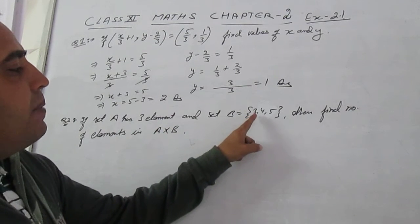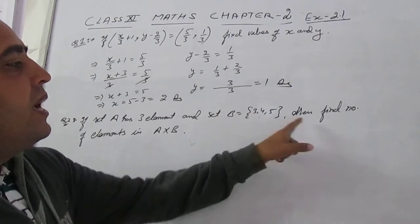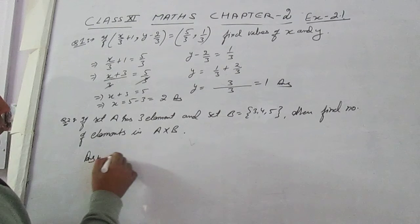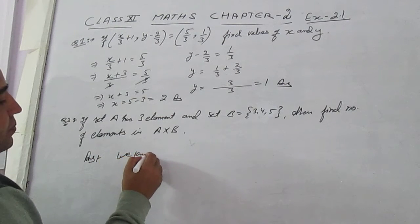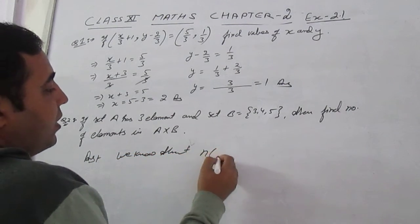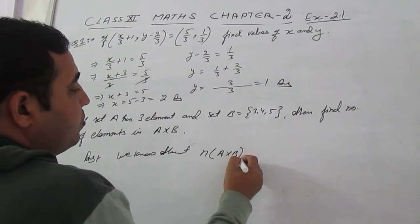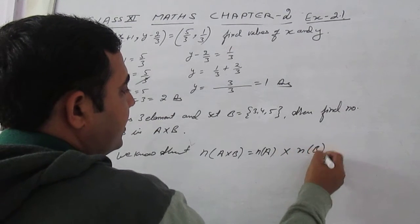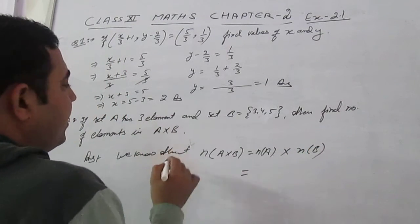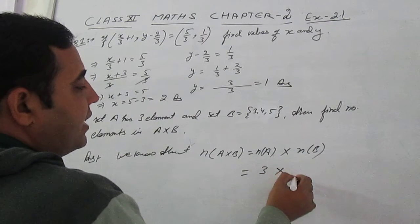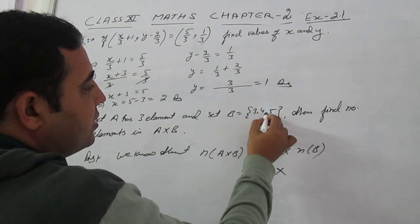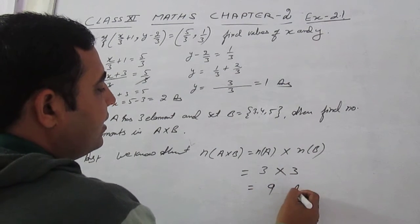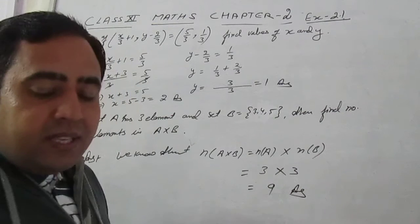Question 2: If set A has three elements and set B has elements {3, 4, 5}, find the number of elements in A cross B. We know that the number of elements in A×B equals the number of elements in A multiplied by the number of elements in B. A has three elements, B also has three elements, so 3 × 3 = 9. The number of elements in A cross B is nine.